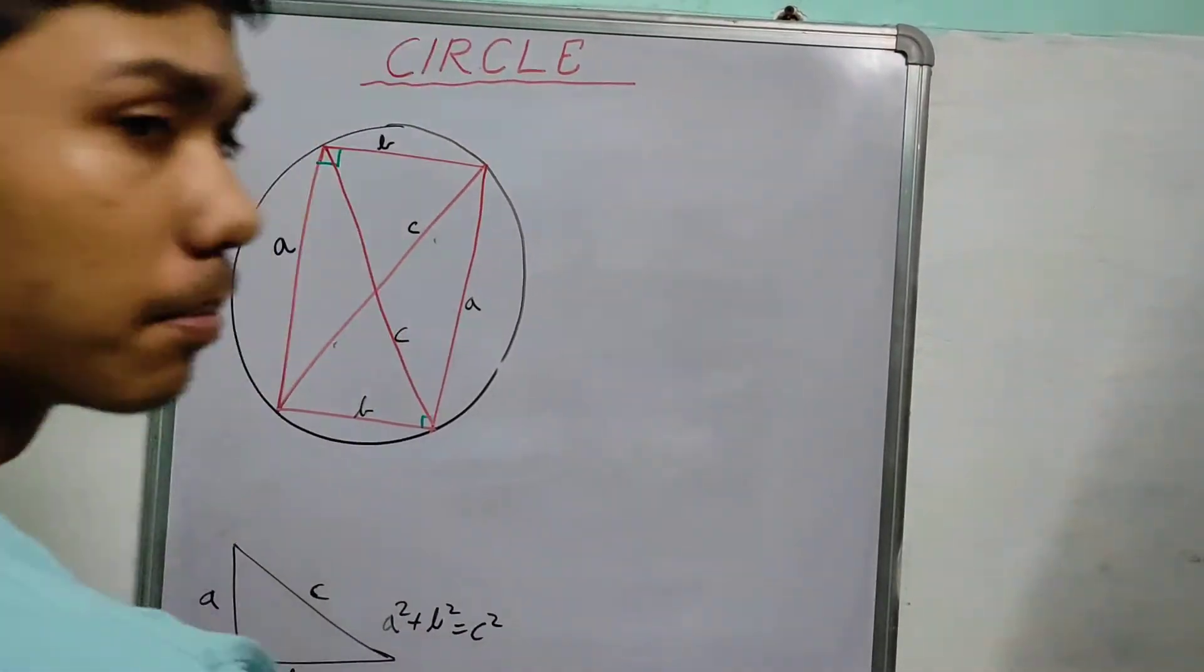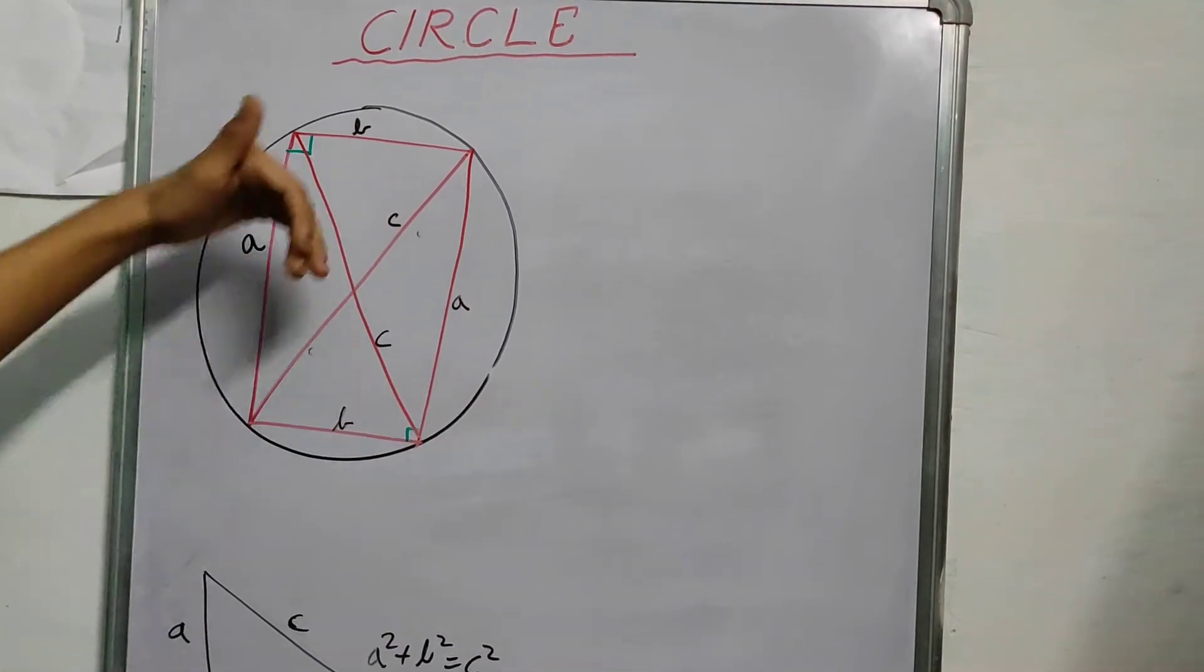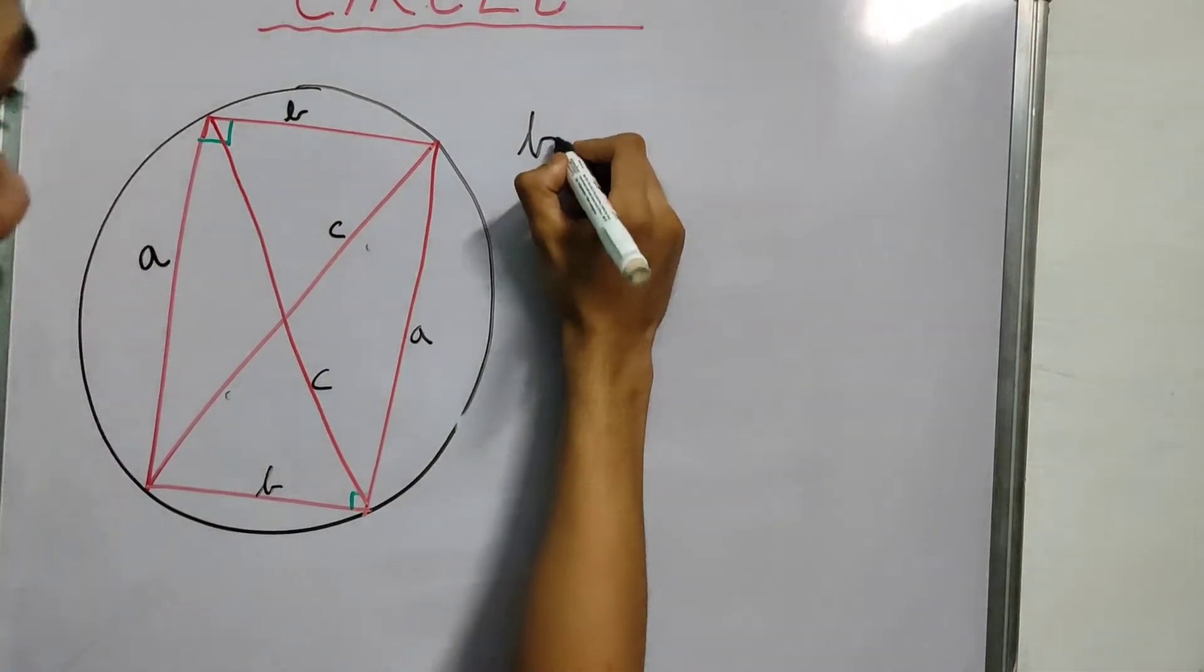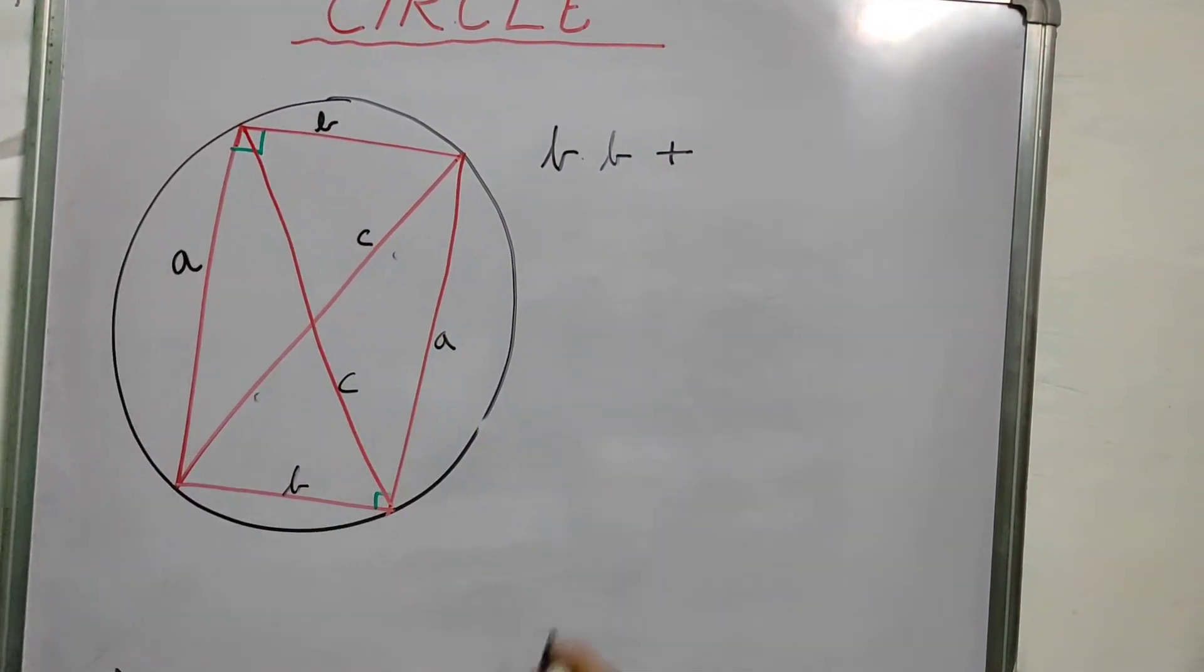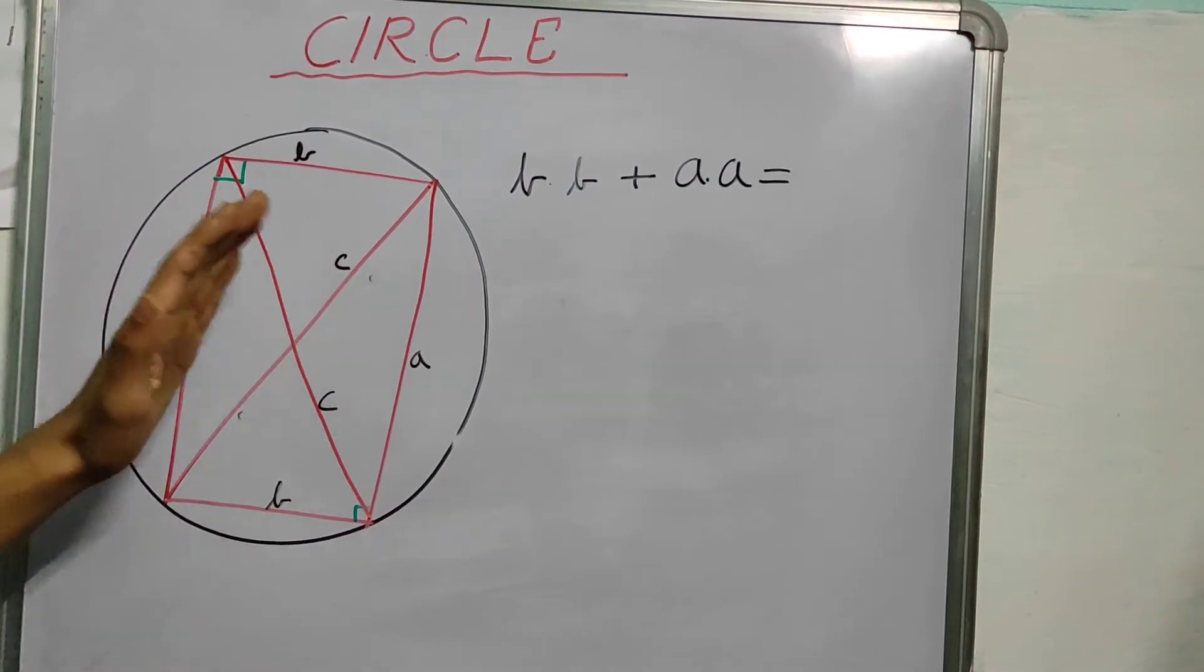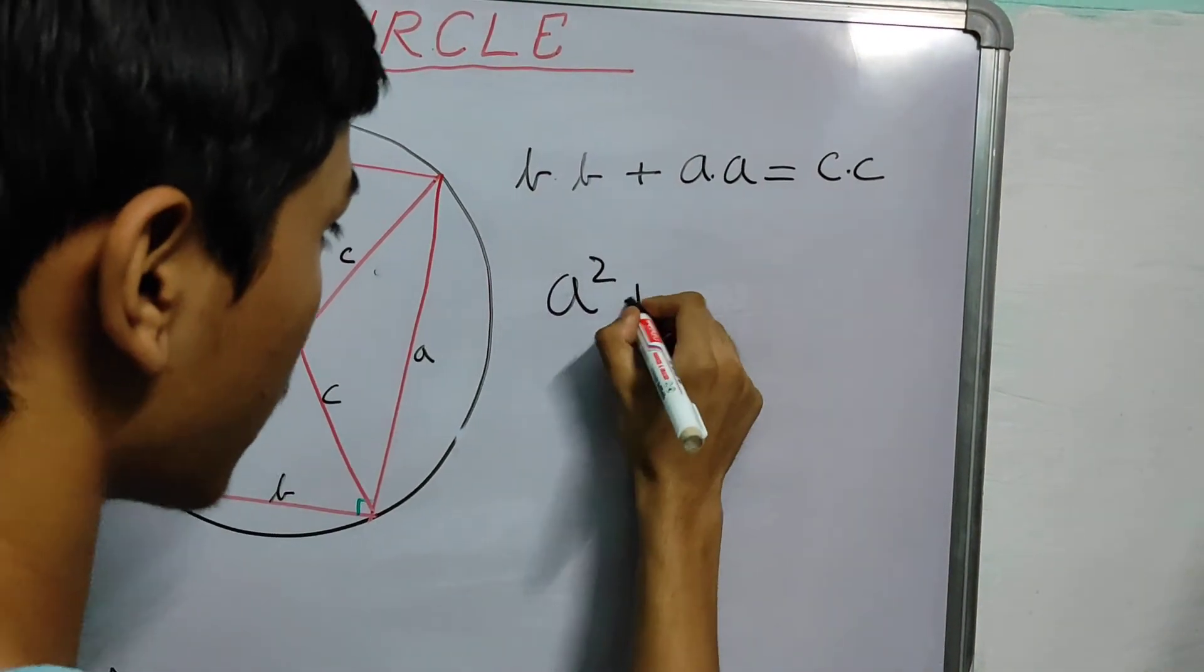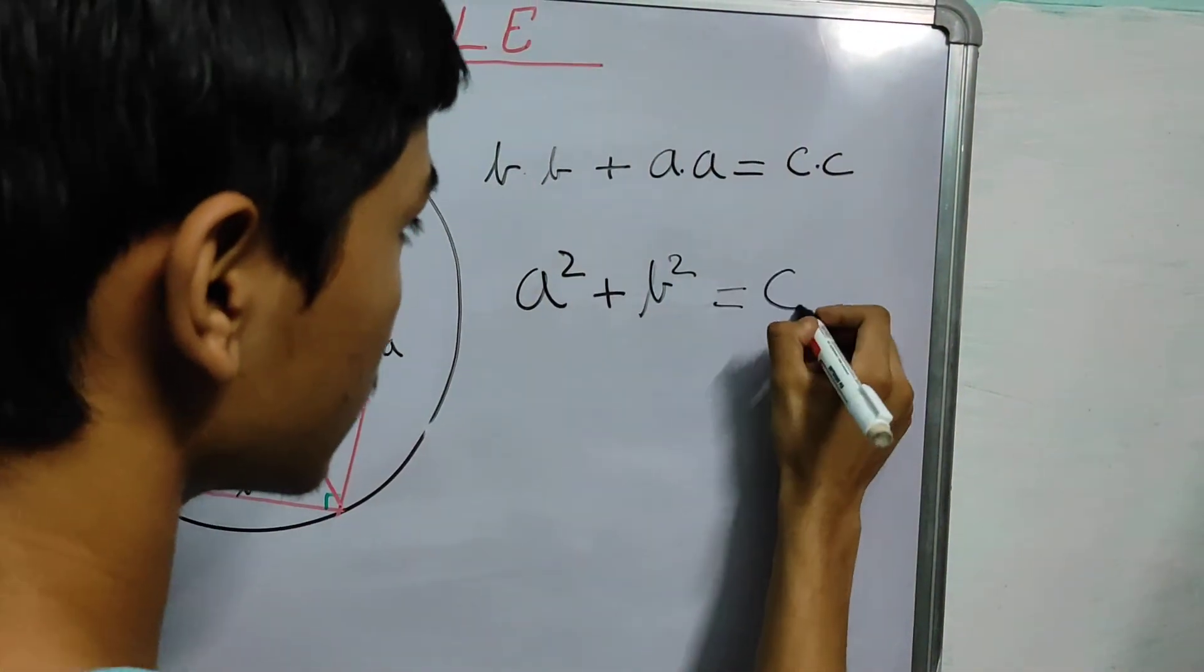So pretty easy. Just use the Ptolemy's theorem. What does it say? Product of two diagonals. The sum of products of two opposite sides. So B, this is also B, plus these two, A into A. It's nothing but the product of these two diagonals, C into C. What do we get? We get A square plus B square is equal to C square.